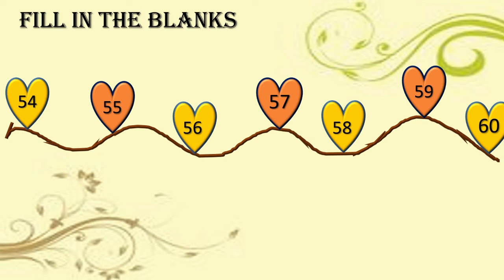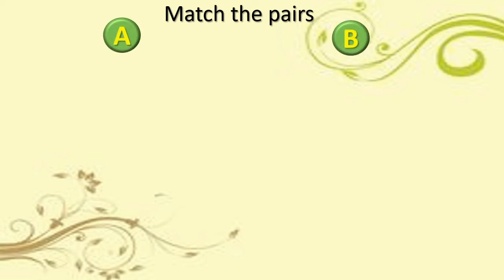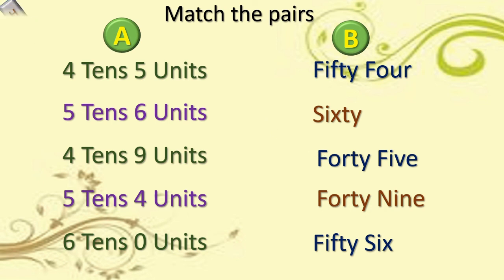This is all whatever we have learned today. Now, on this base, here some homework is there for you. Two columns A and B — both columns have something. You have to match them from A to B. Here, four tens and five units is given. You know what is the meaning of four tens and five units? That makes forty-five. And where is forty-five? Here it is — forty-five. So, you have to draw a line from this to forty-five. Like this, complete the match the pairs.